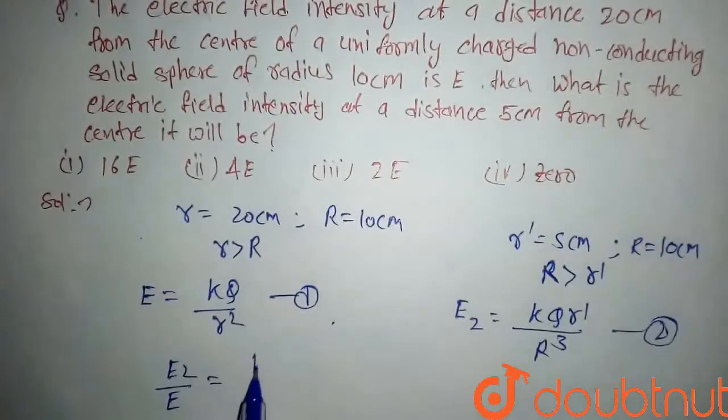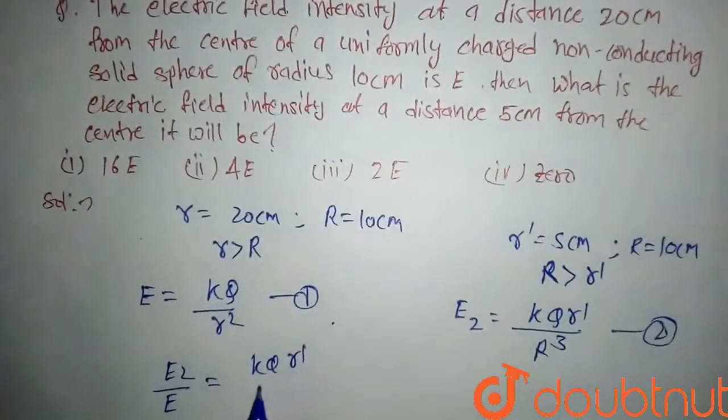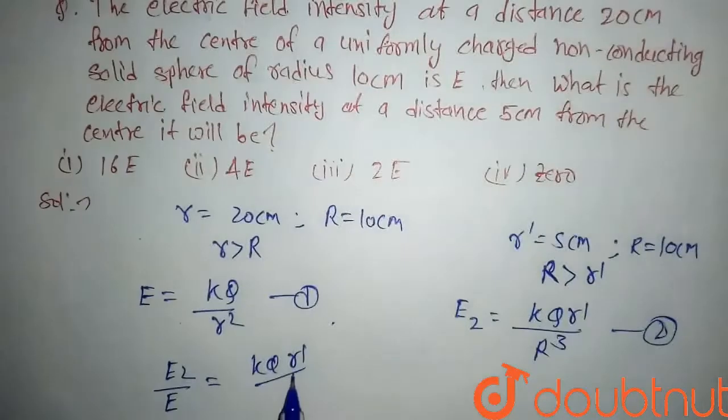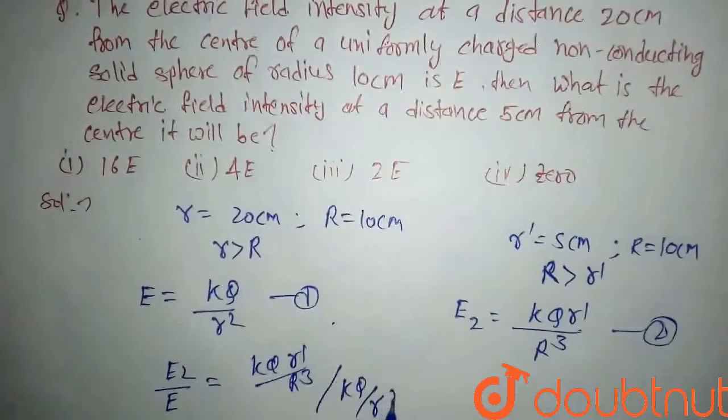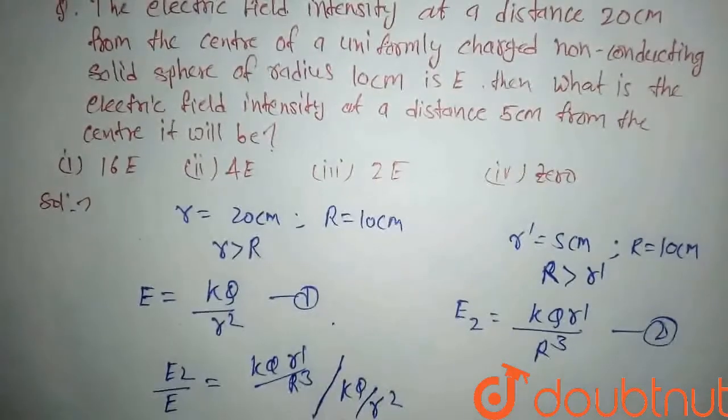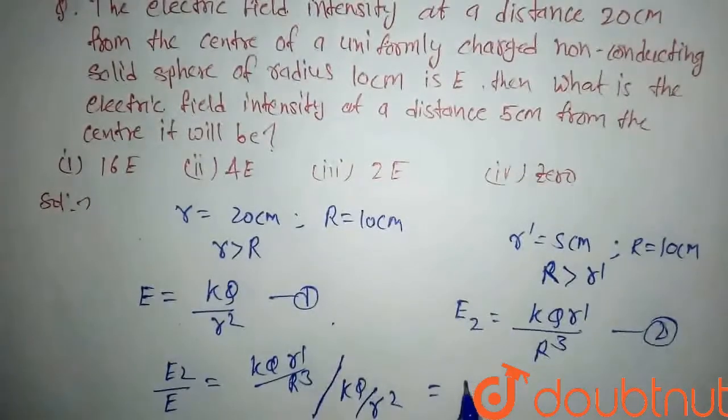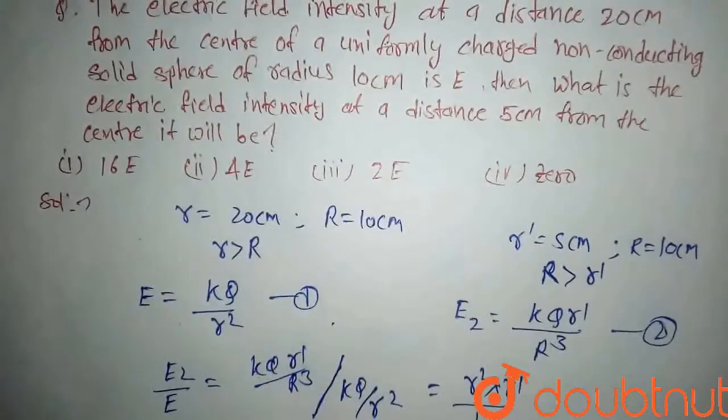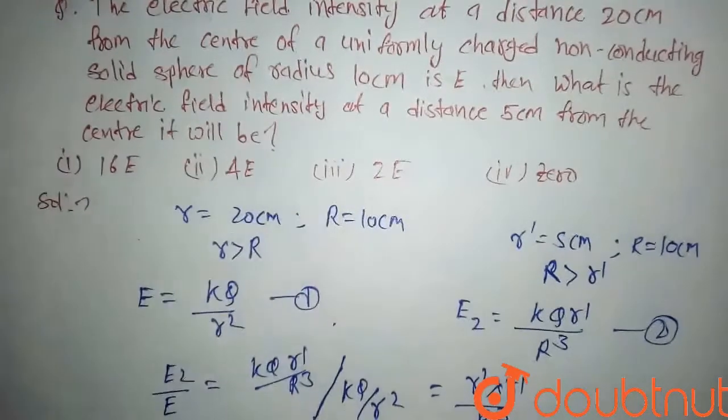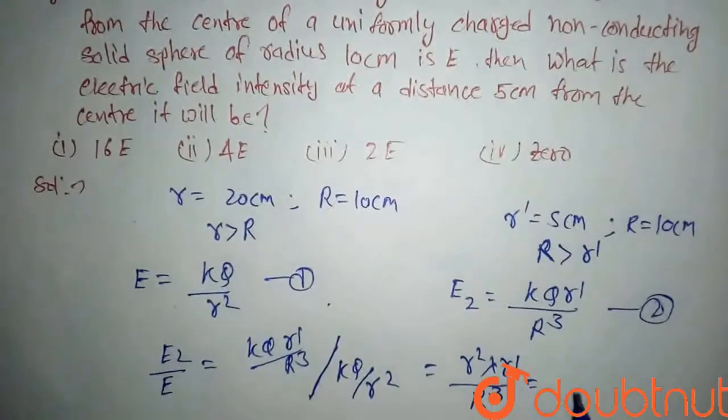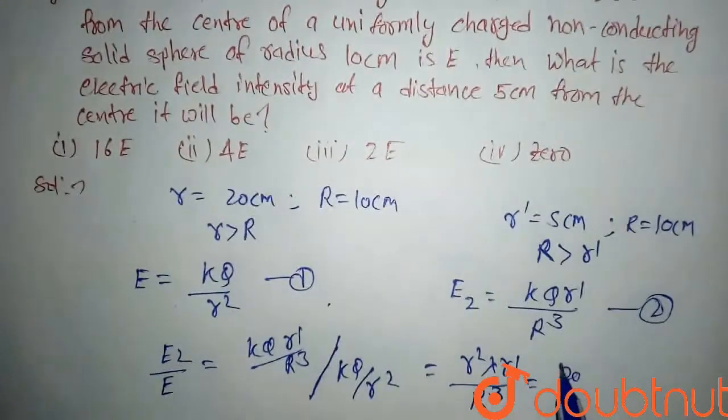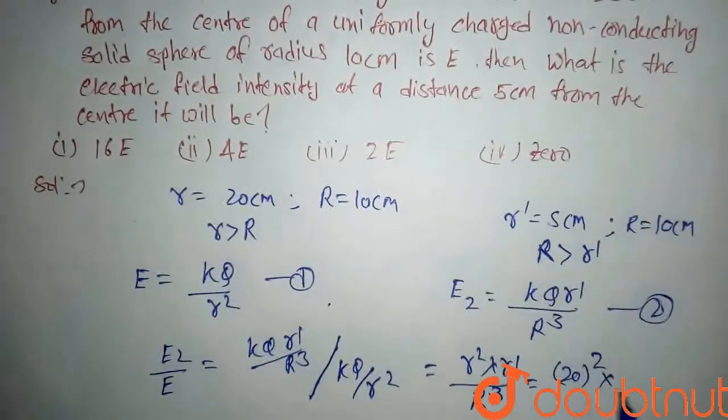Equals to kQ r dash upon R cube divided by kQ upon r square. So after dividing it, we will get here r square into r dash upon capital R cube. So if we will put the value, we will get the answer. So here our r is 20 square into r dash...